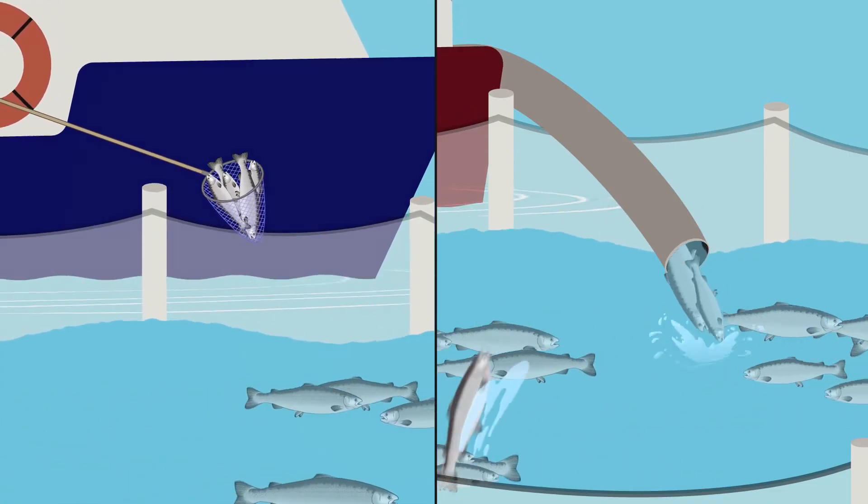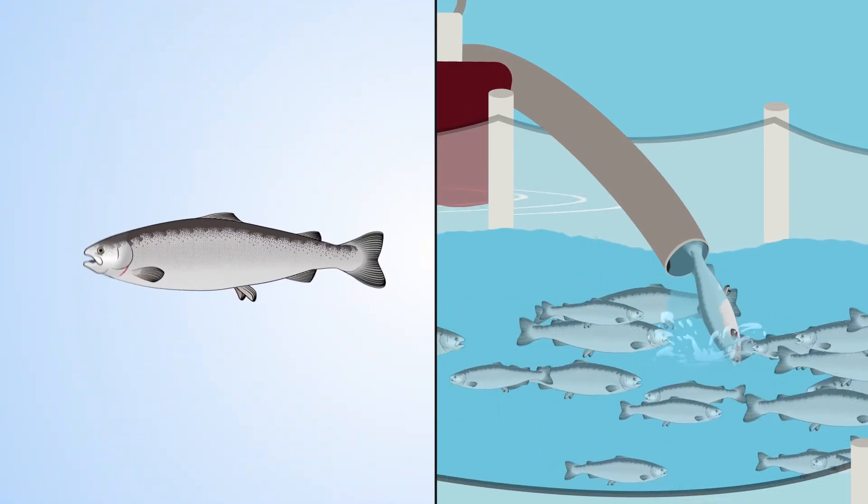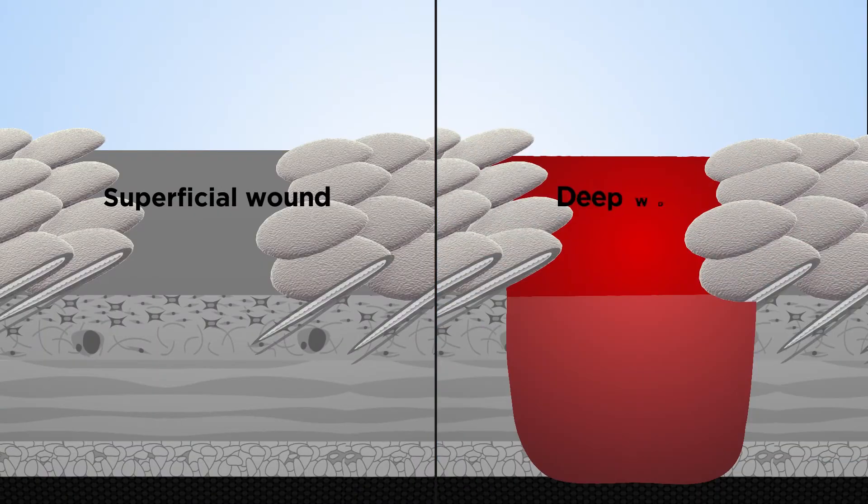Mechanical damage occurs through handling procedures such as pumping and crowding. However, fish have evolved a rapid way of healing.